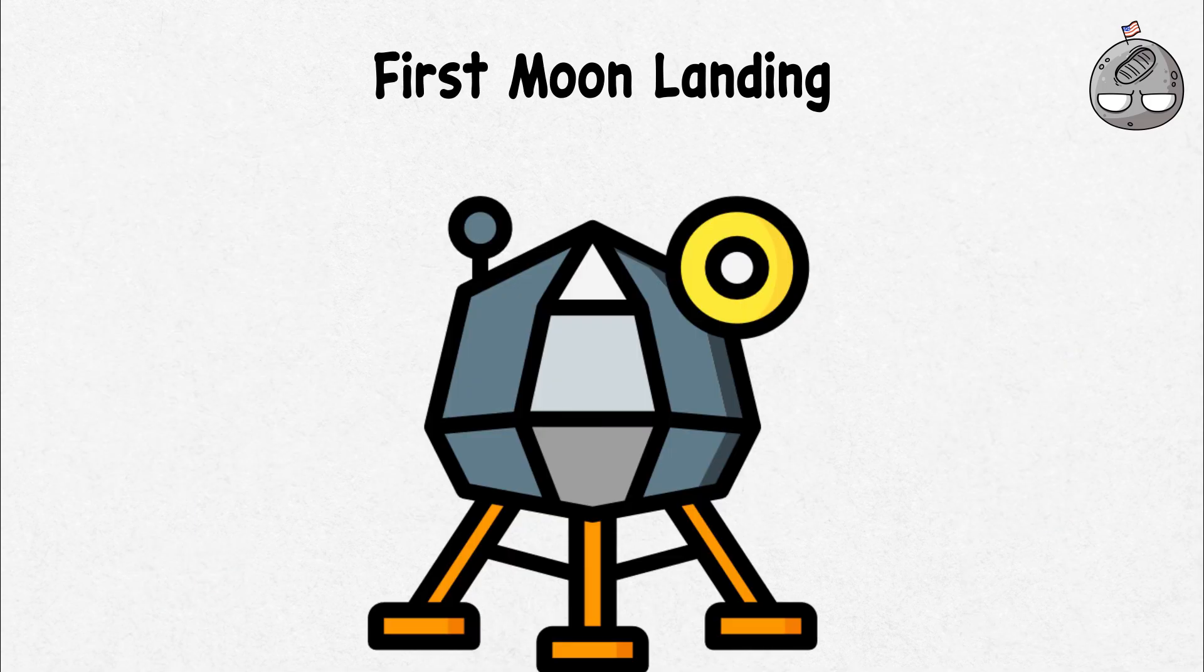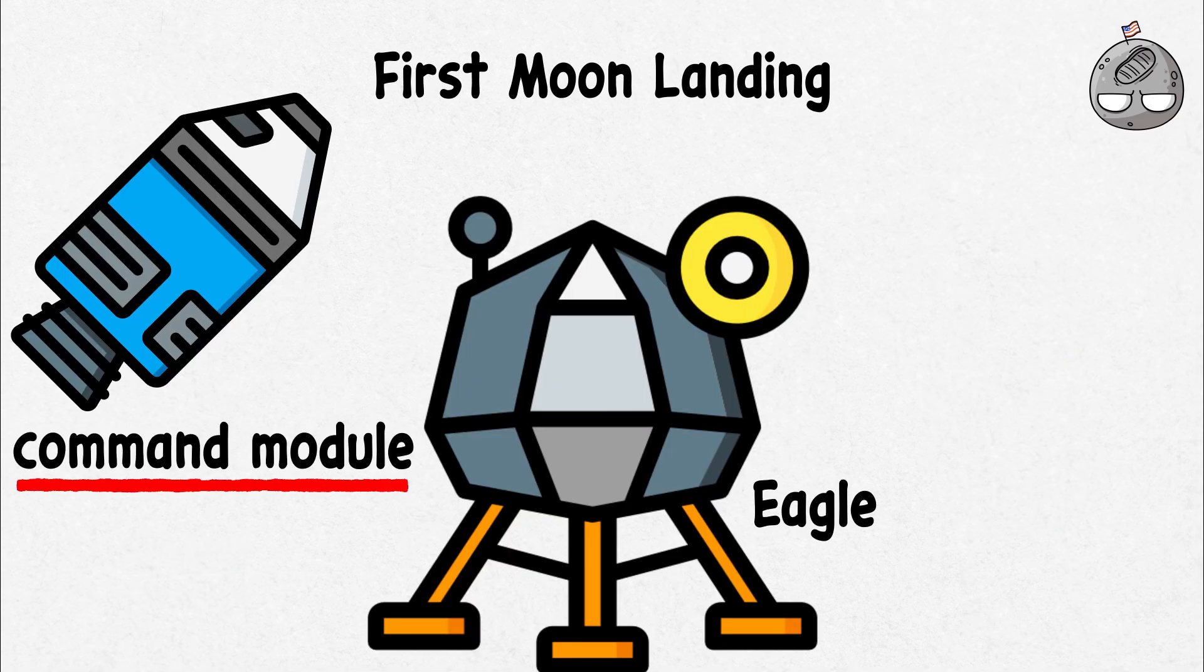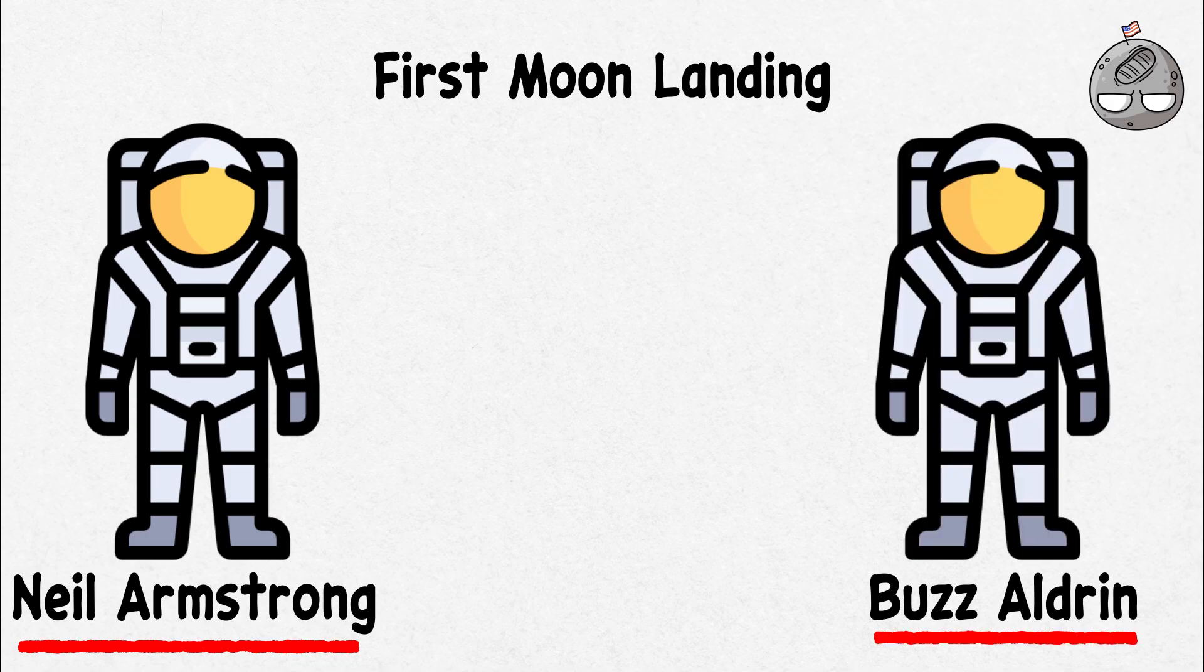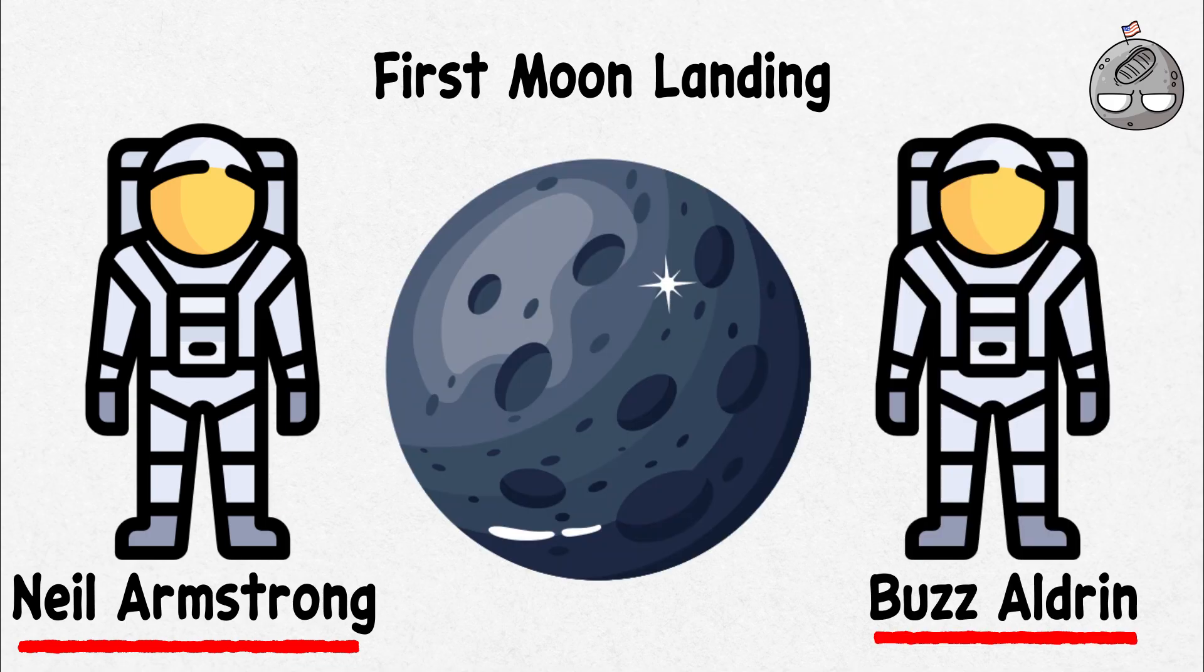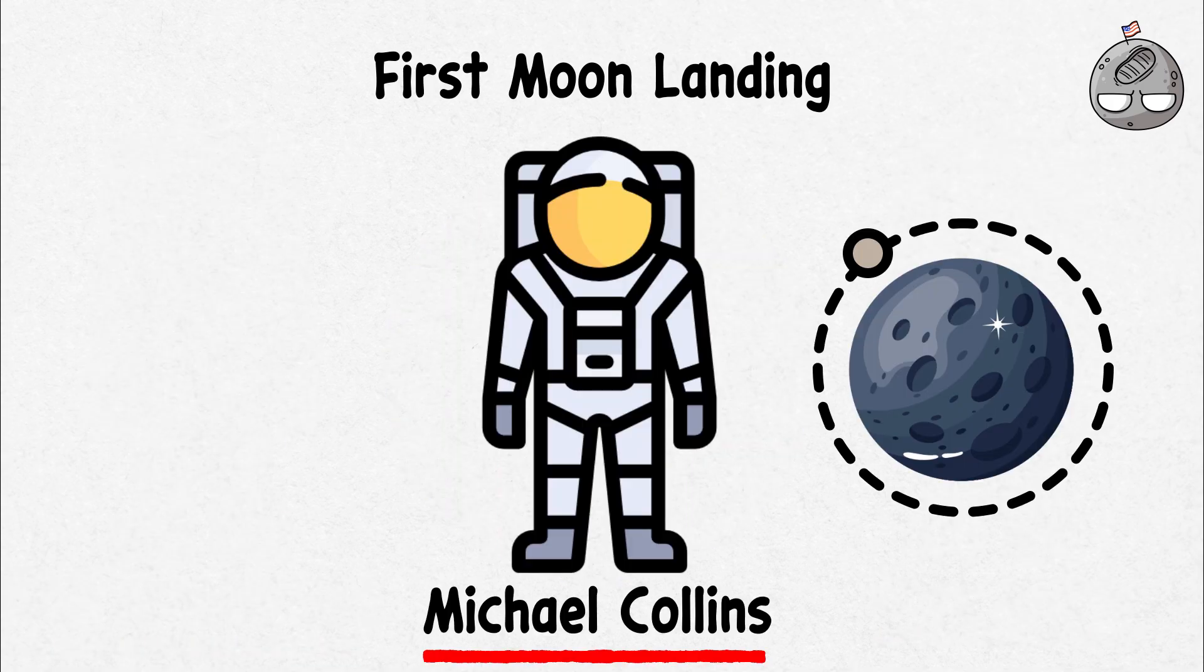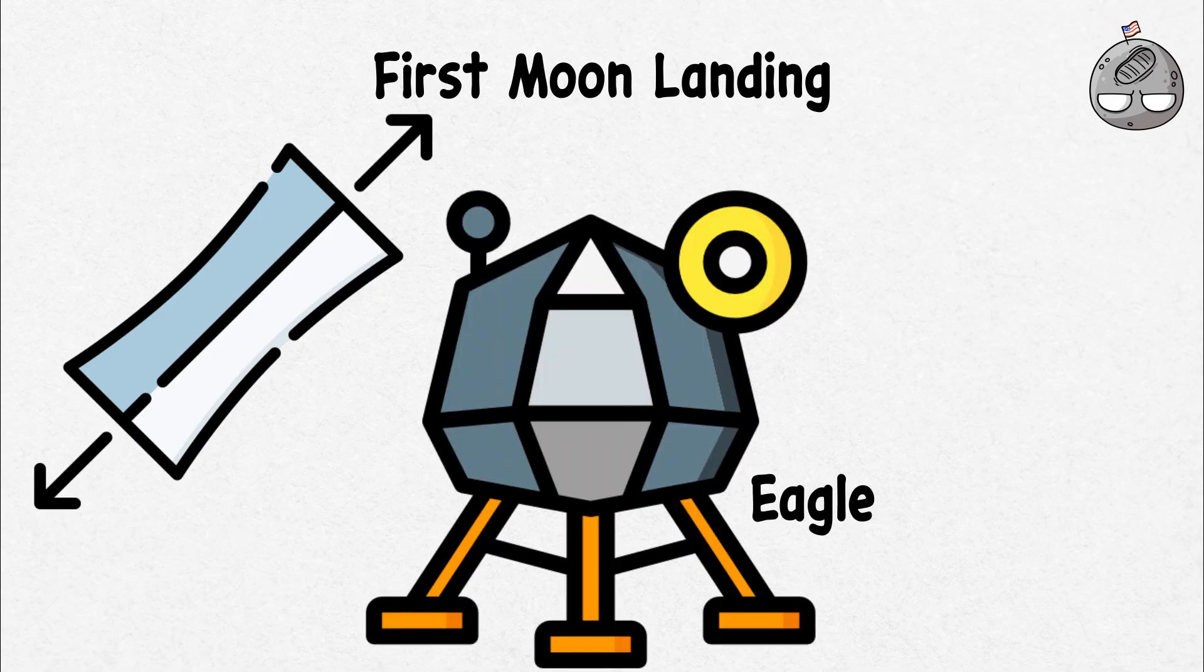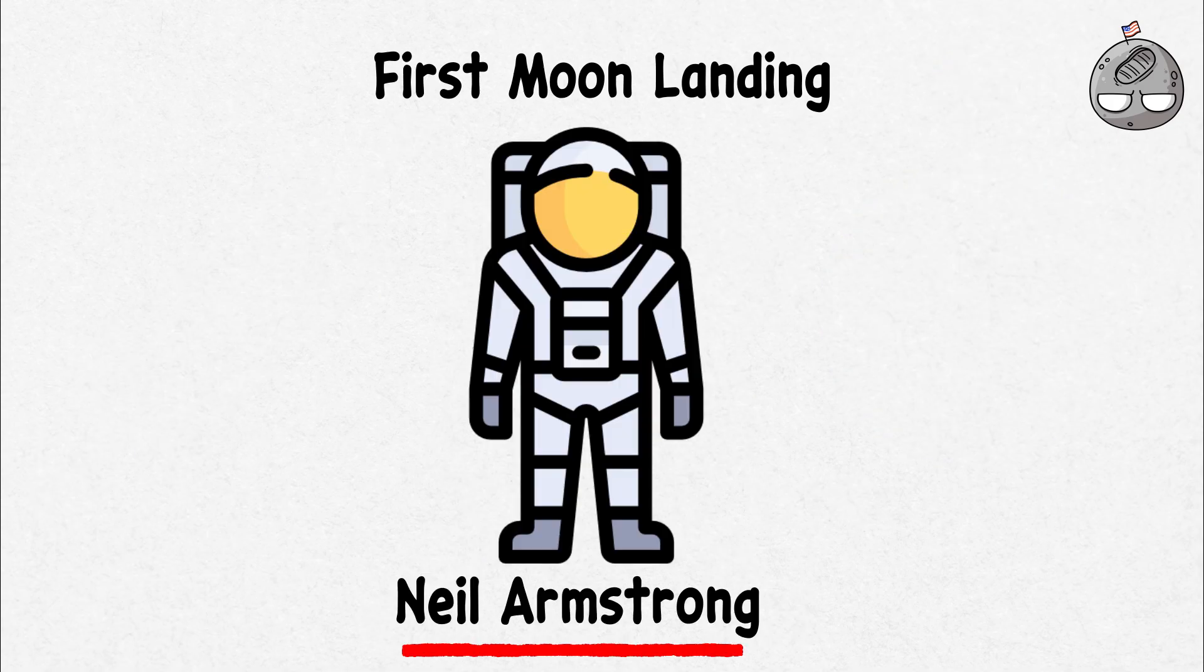After days of travel, the lunar module Eagle separated from the command module main spacecraft. Armstrong and Aldrin carefully descended towards the moon's surface while Collins stayed in orbit. The tension was high as Eagle approached its destination.